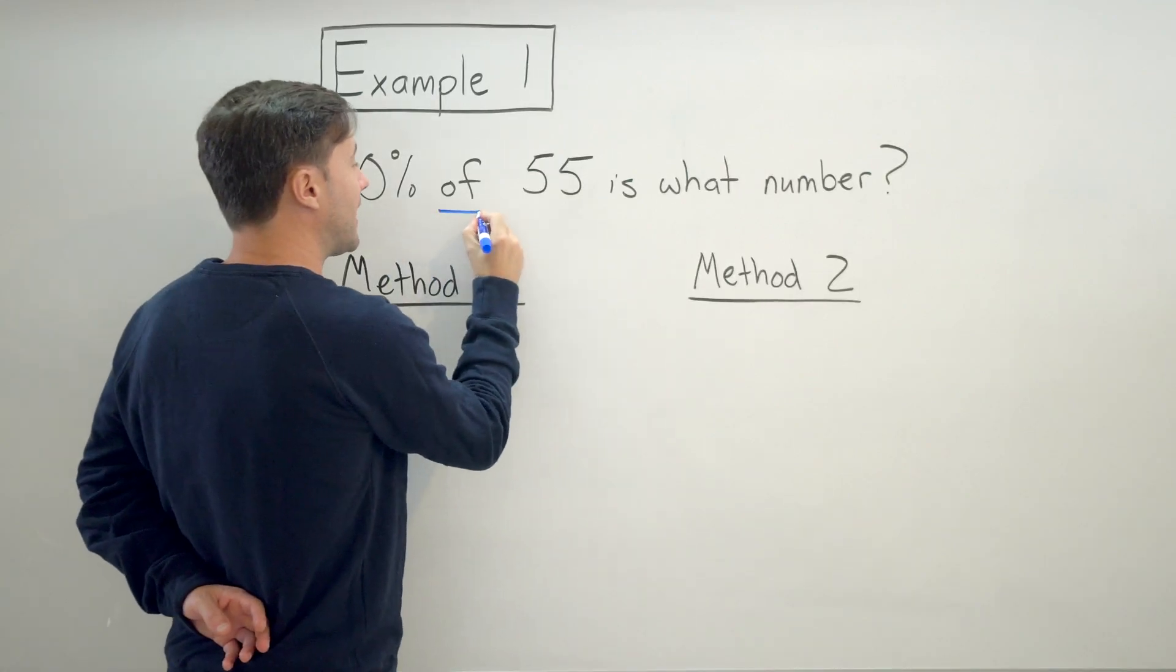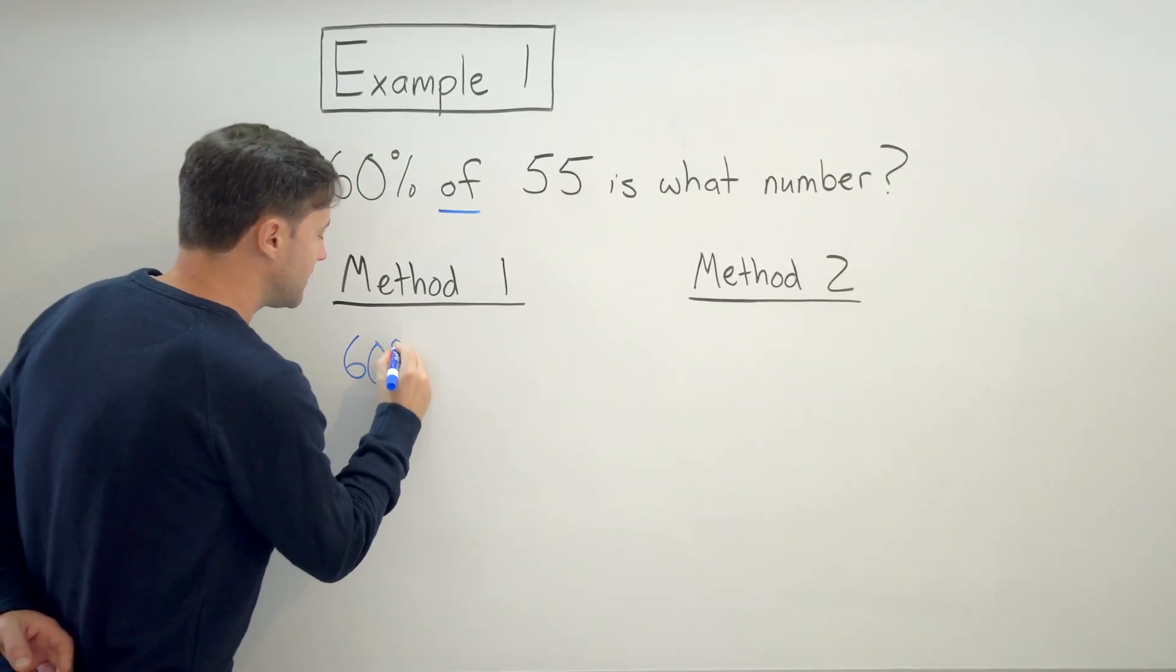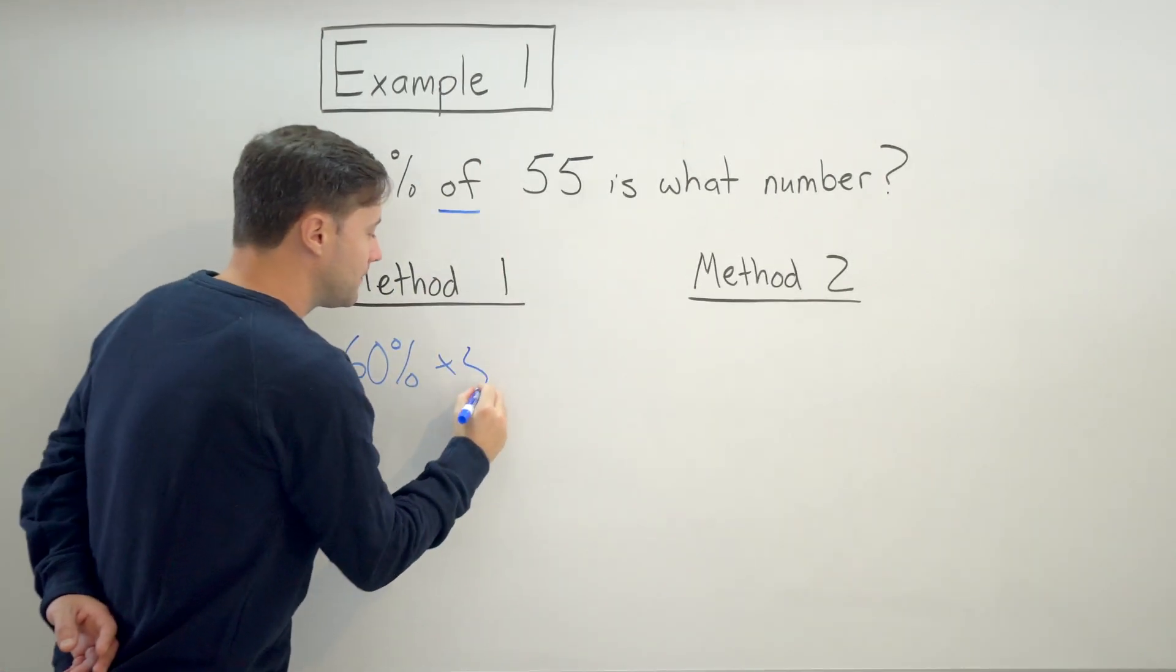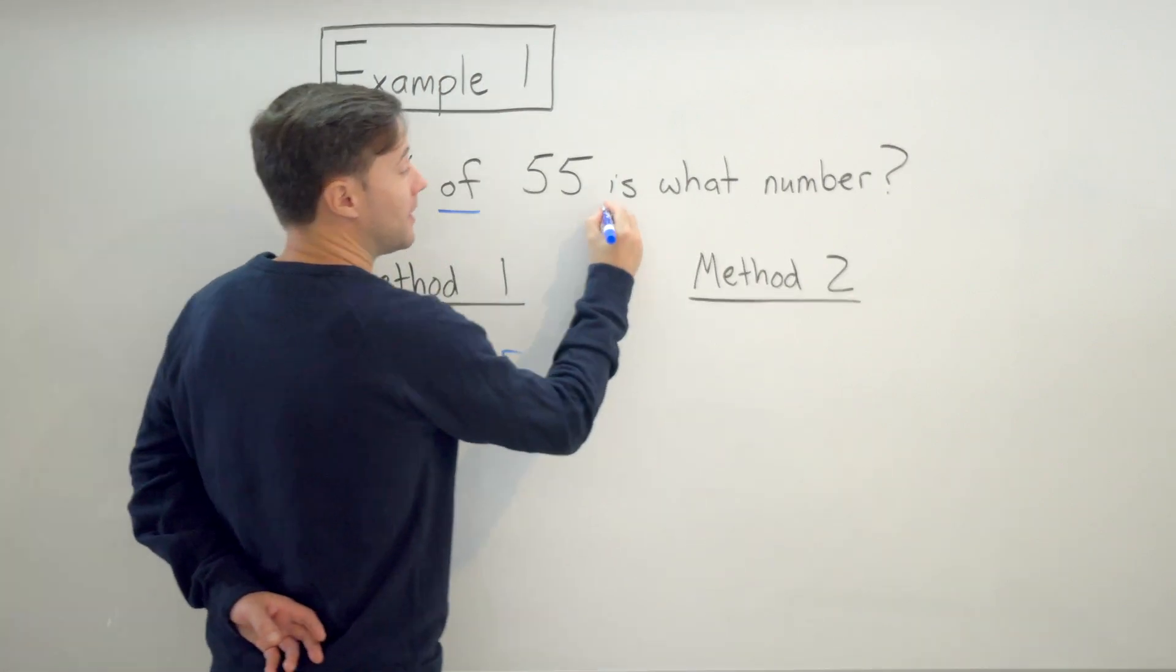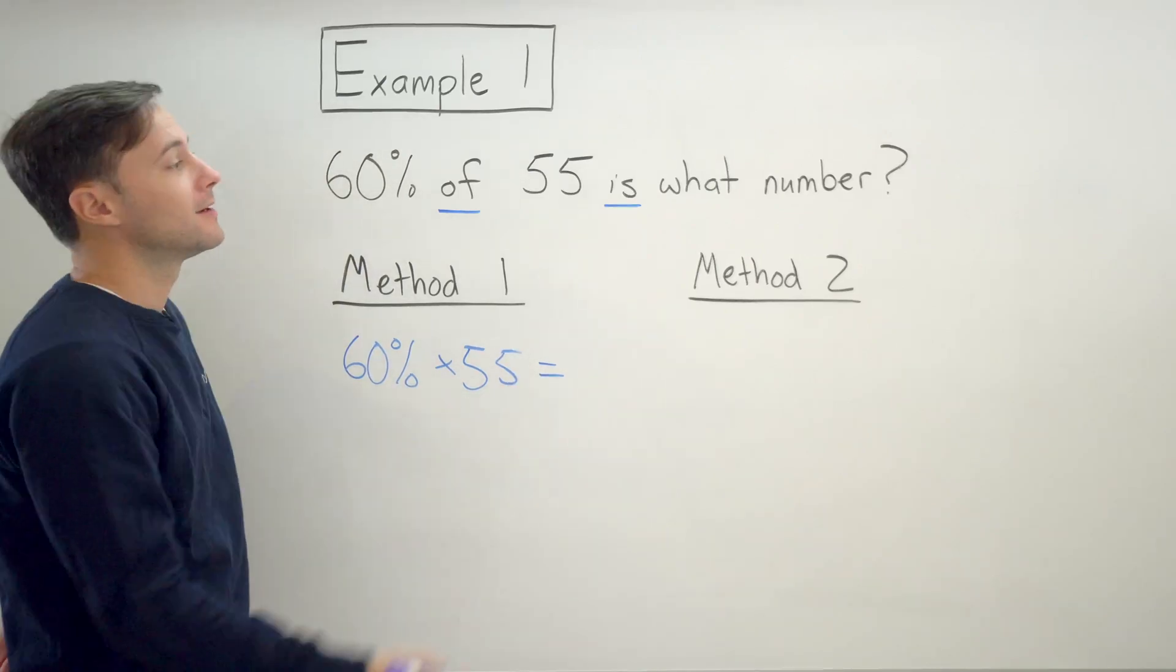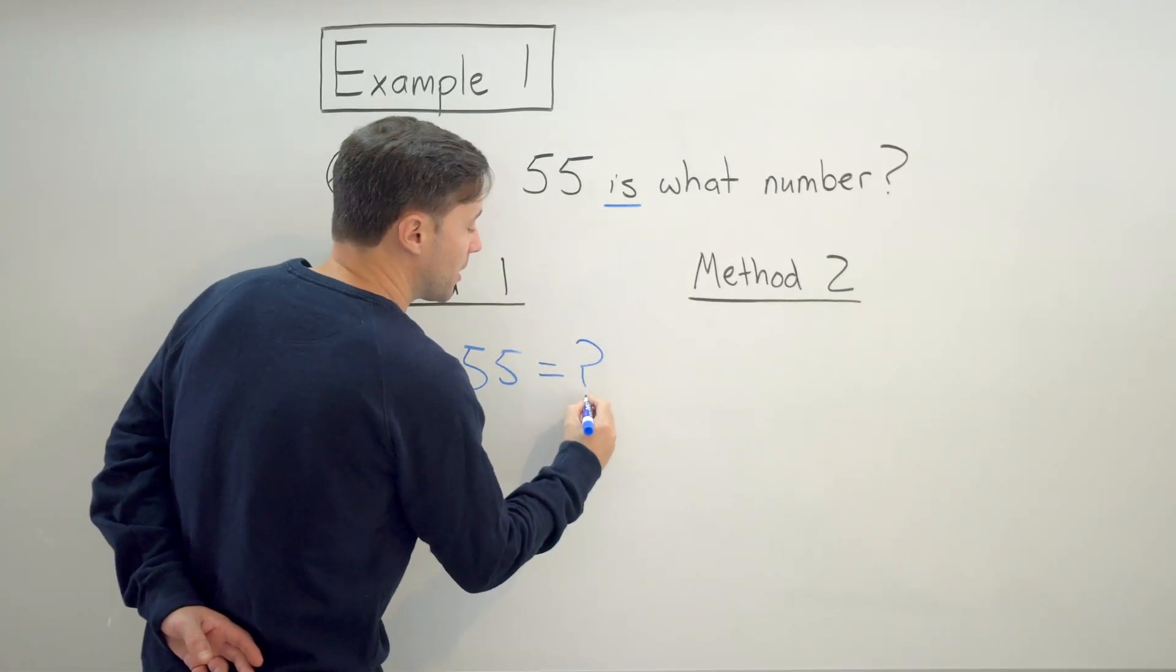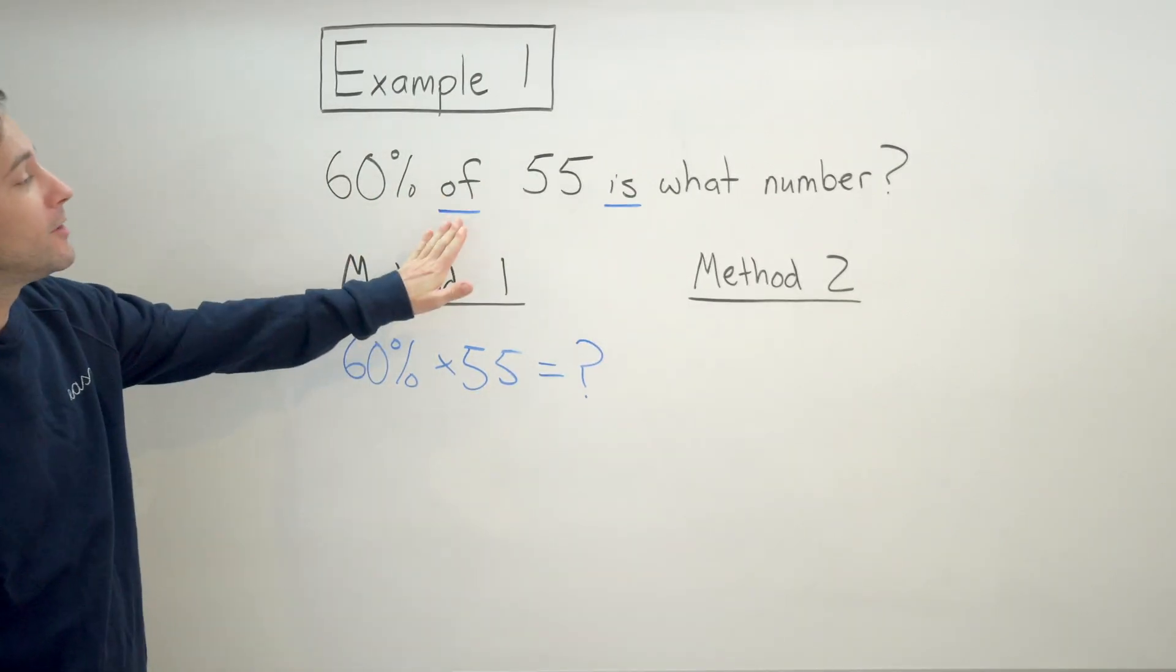The first one is going to be using the keywords in this question. Of is a keyword and that just means multiplication. So I'm going to write 60% times 55. Is is another keyword and that means equals. So is equals what number? That's what we're trying to find out. So I'm just going to put a question mark in there. So this is essentially the problem we have just by using the keywords.